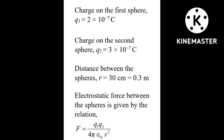Answer step by step. The charge on the first sphere: q1 = 2×10⁻⁷ coulomb. The charge on the second sphere: q2 = 3×10⁻⁷ coulomb. The distance between the spheres: r = 30 cm, which we convert to 0.3 meters. Then write the equation for finding force: F = (1/4πε₀) × q1×q2 / r².